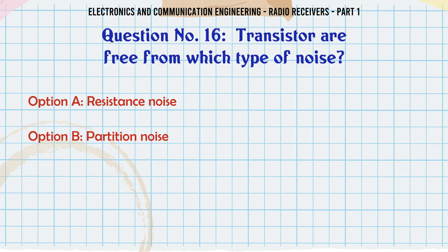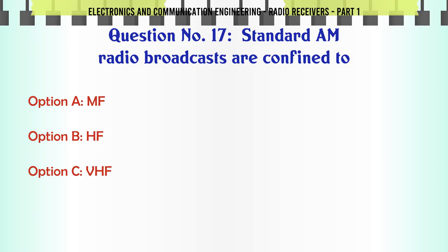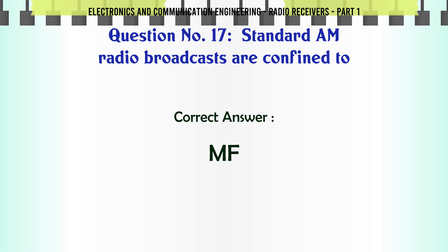Transistors are free from which type of noise? a. Resistance noise. b. Partition noise. c. Flicker noise. d. Shot noise. The correct answer is partition noise.